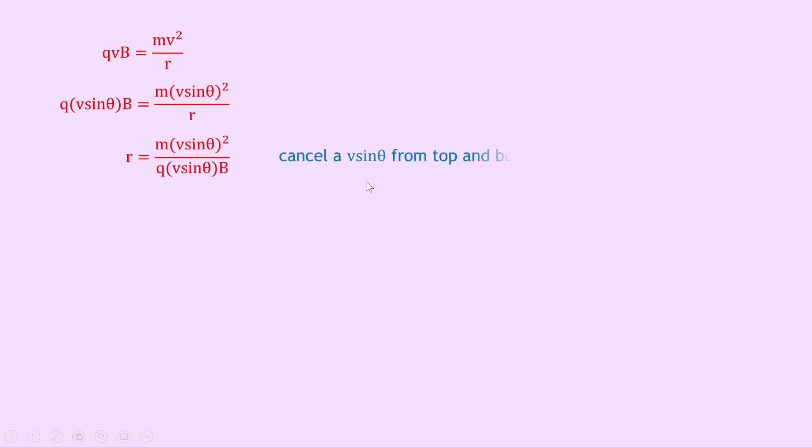We're trying to determine radius, so let's rearrange for R. The easiest way is to swap the numerator and denominator terms, giving R equals M times (V sine theta) squared over Q times V sine theta times B. We now have a (V sine theta) squared divided by a V sine theta term, so we can cancel one V sine theta from top and bottom, ending up with R equals M times V sine theta over QB.